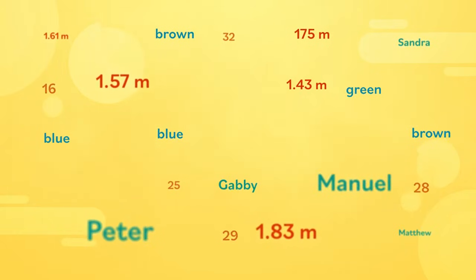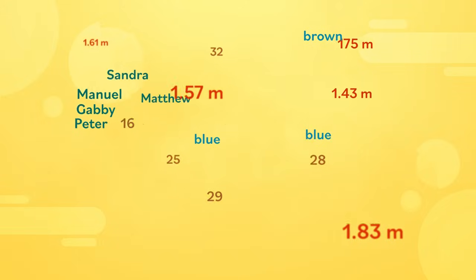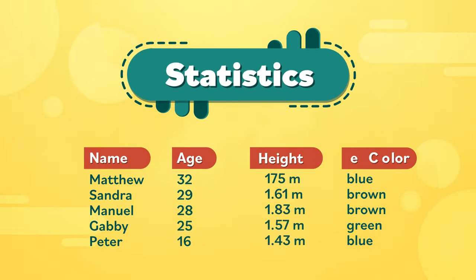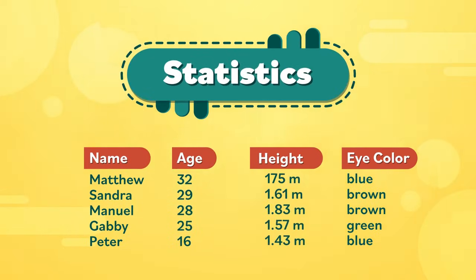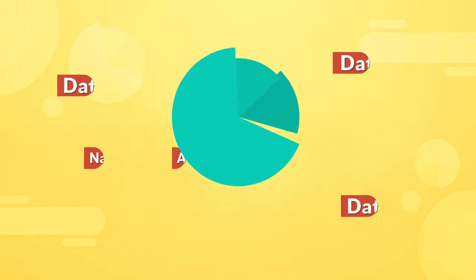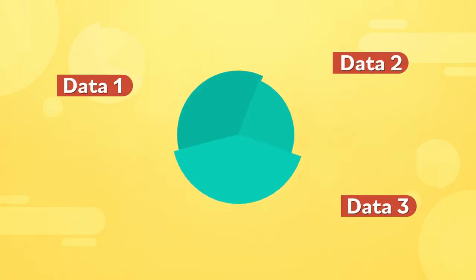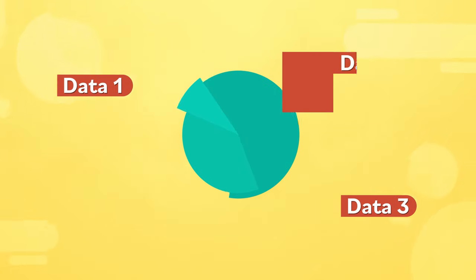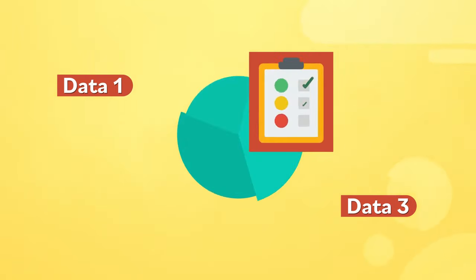If you organize and use this data in order to look at the group as a whole, you're using statistics. Statistics is a type of math that teaches you how to collect and analyze data or information in order to find answers and make decisions.